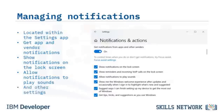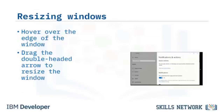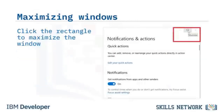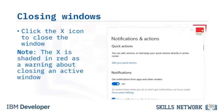Let's learn about the control buttons used to resize, maximize, and minimize windows on the desktop. To resize a window, hover over the edge to display the double-headed arrow, then drag it to resize. You can quickly maximize a window by clicking the rectangle. To minimize, click the underscore button. To close a window, click the X, which shades red to remind you that you are about to close an active window.